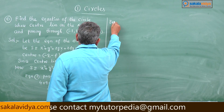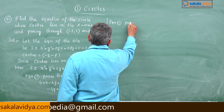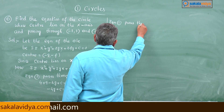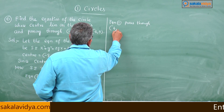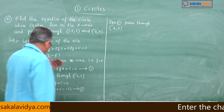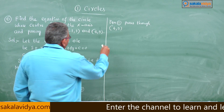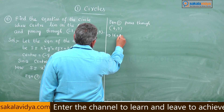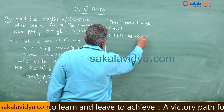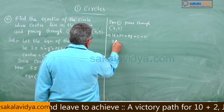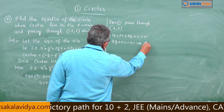Again, the required circle passes through the other point 4 comma 5. Substituting in equation 1, we get 16 plus 25 plus 8g plus c equals 0, which gives 8g plus c equals minus 41. Call this equation 3.